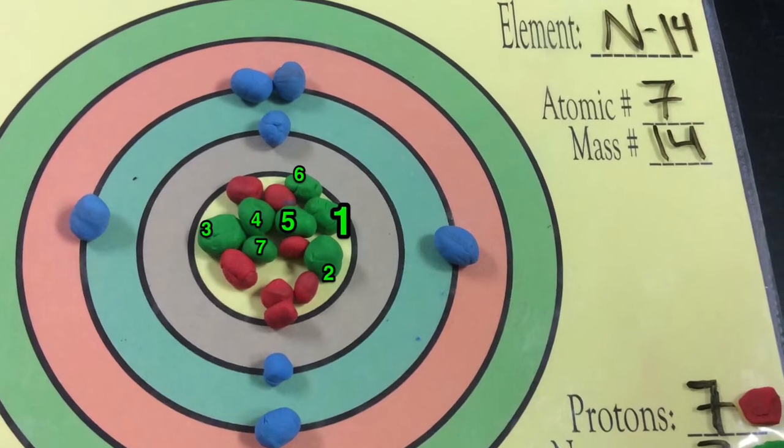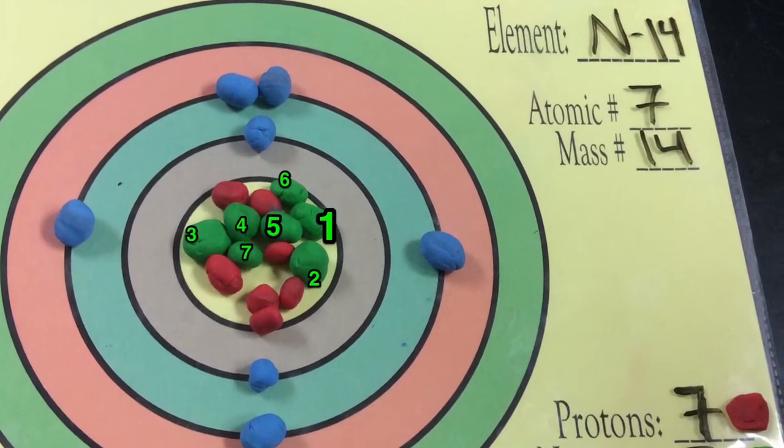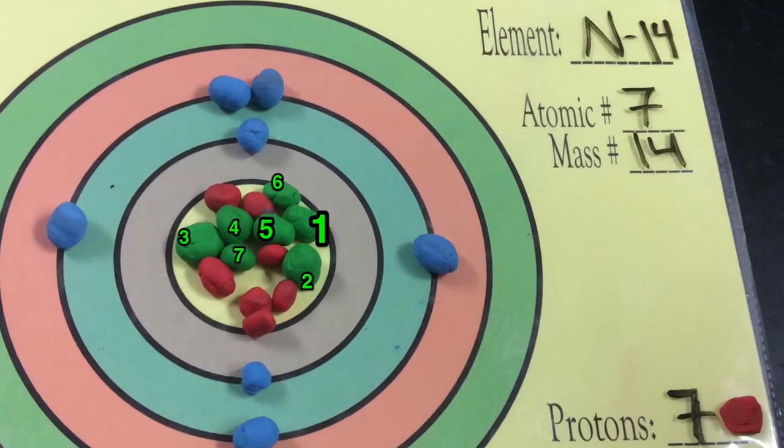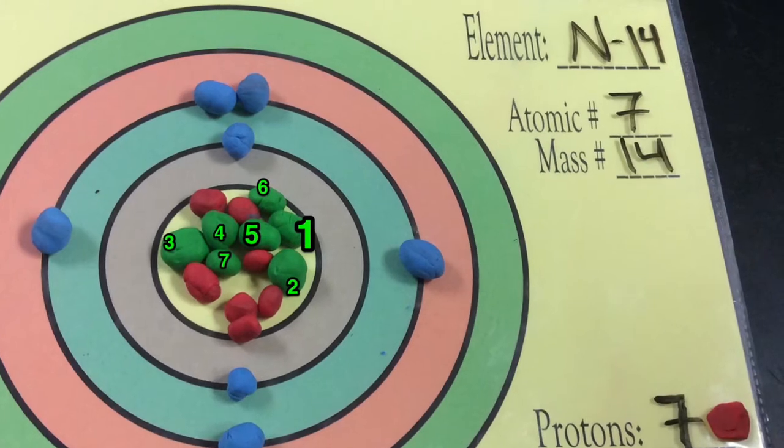N14 has an atomic number of 7 and contains 7 protons and 7 electrons. It has a mass number of 14, which makes the amount of neutrons 7.